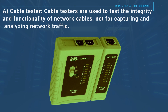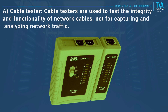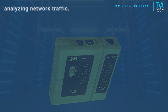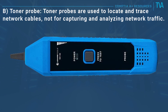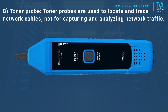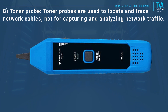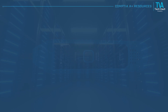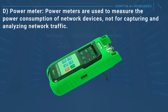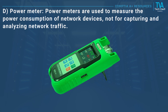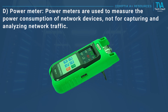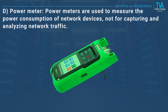A, cable tester: cable testers are used to test the integrity and functionality of network cables, not for capturing and analyzing network traffic. B, toner probe: toner probes are used to locate and trace network cables, not for capturing and analyzing network traffic. D, power meter: power meters are used to measure the power consumption of network devices, not for capturing and analyzing network traffic.